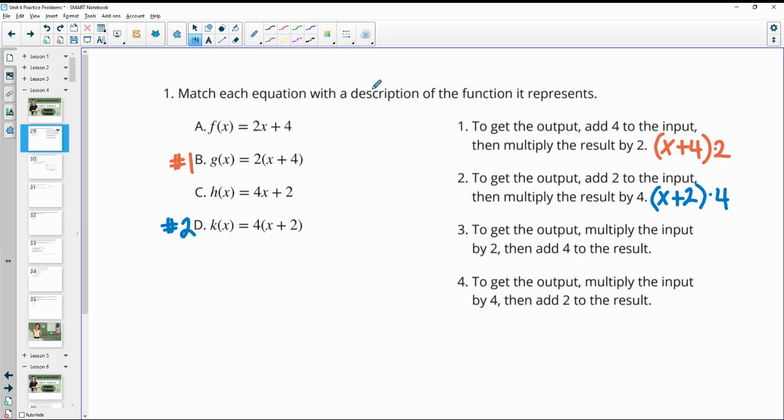Number three, to get the output, multiply the input by 2. So we're going to take and multiply 2 times the input. Then we're going to add 4 to the result. So we're going to take this quantity and we're going to add 4 to it. And we see that here as option A.